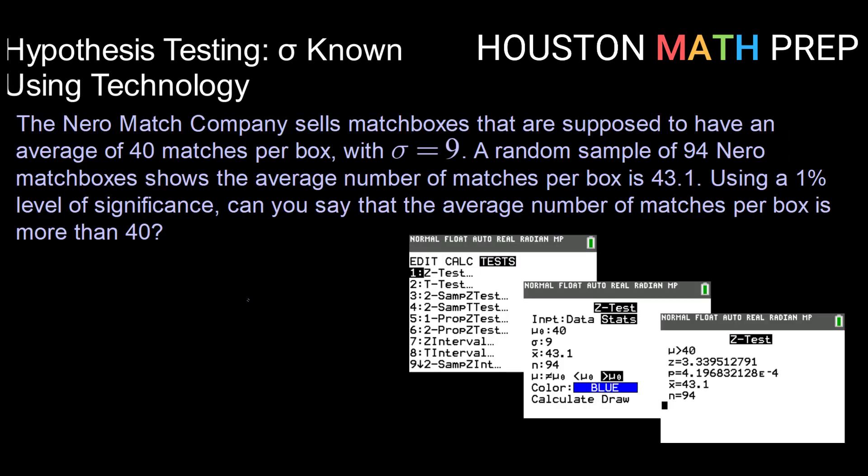So let's say we have the Nero Match Company sells matchboxes that are supposed to have an average of 40 matches per box, where the population standard deviation is 9. A random sample of 94 matchboxes shows that the average number of matches per box is 43.1. Using a 1% level of significance, can you say that the average number of matches per box is more than 40?